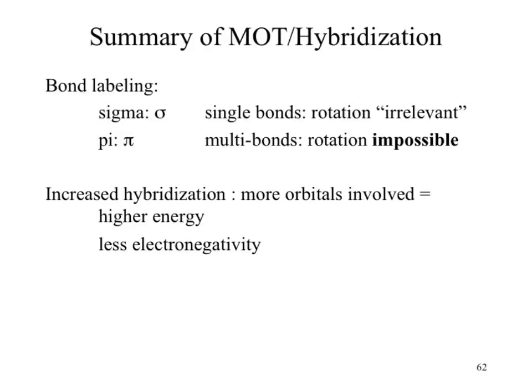Molecular orbital theory. The big things that come out of it are your sigma and pi notation. You've probably heard of sigma bonds and pi bonds before now and didn't really have a context of why they were coming about. They come about through their reference within molecular orbital theory, and we just kind of use those references further on.